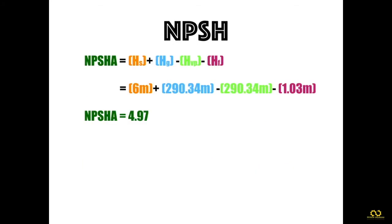Once you populate these values in the formula, you get the final value: net positive suction head available is 4.97 meters. Is this acceptable? Does cavitation still exist?